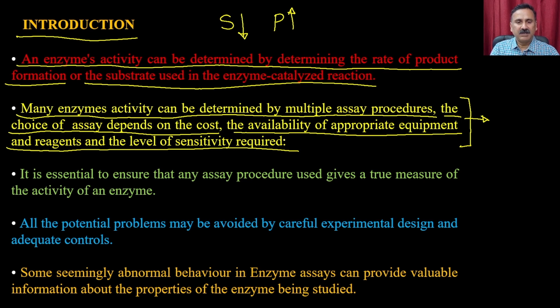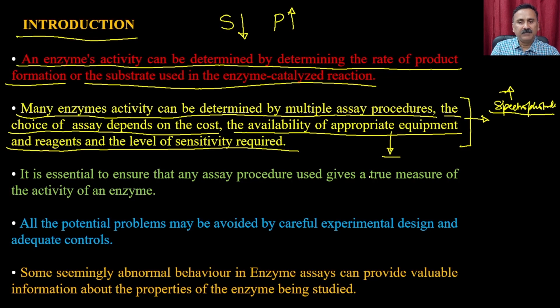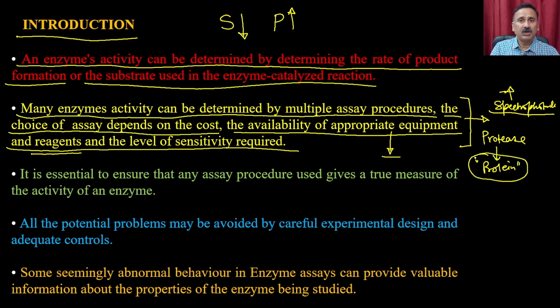The assay depends on the availability of equipment — for example, if you have a spectrophotometer, you can set up an assay where there is a change in the visible region. If you have a fluorimeter, you can design the enzyme assay accordingly. You also require different types of reagents. For example, if you are developing a protease assay, you need different types of proteins as the substrate. The availability of the substrate determines whether you can develop that assay.